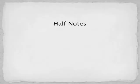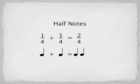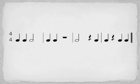Let's learn another note value. One quarter plus one quarter equals two quarters, or one half. This is a half note. In 4-4 time, you would hold a half note for two beats of value.